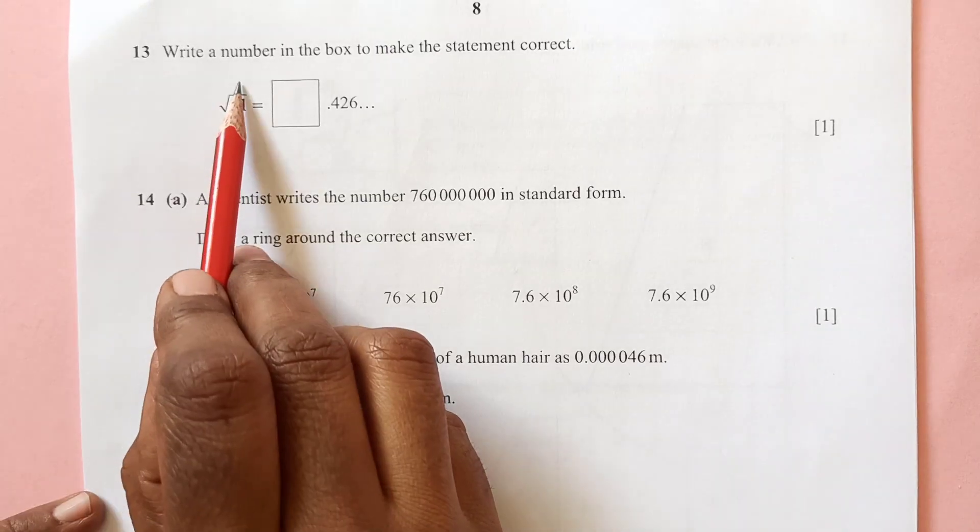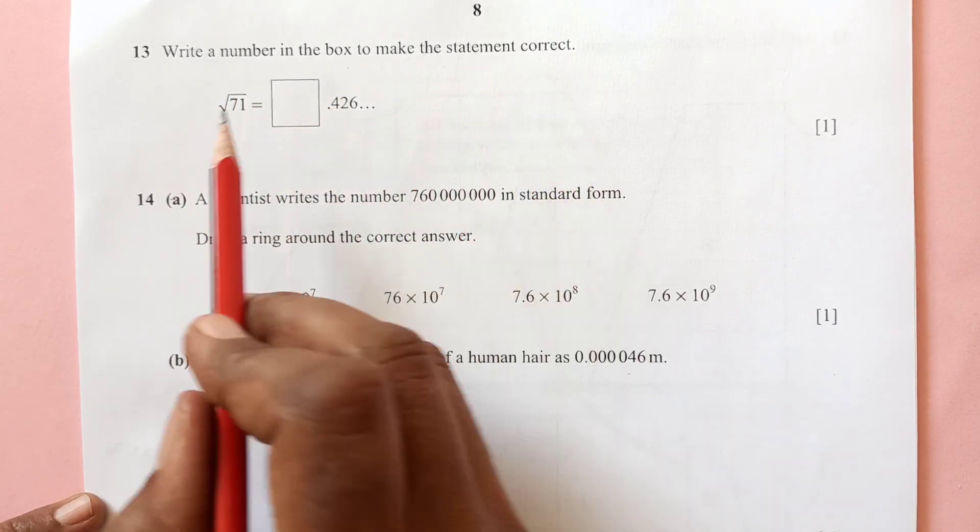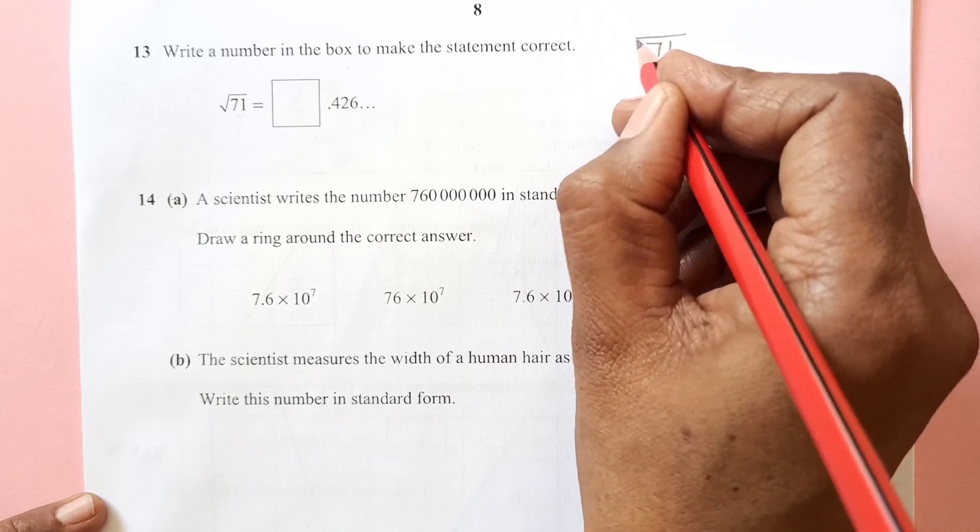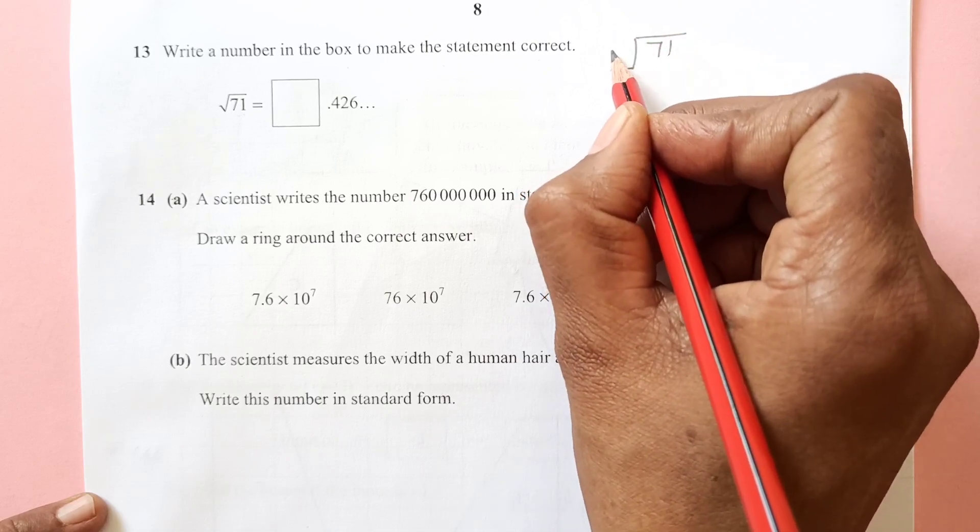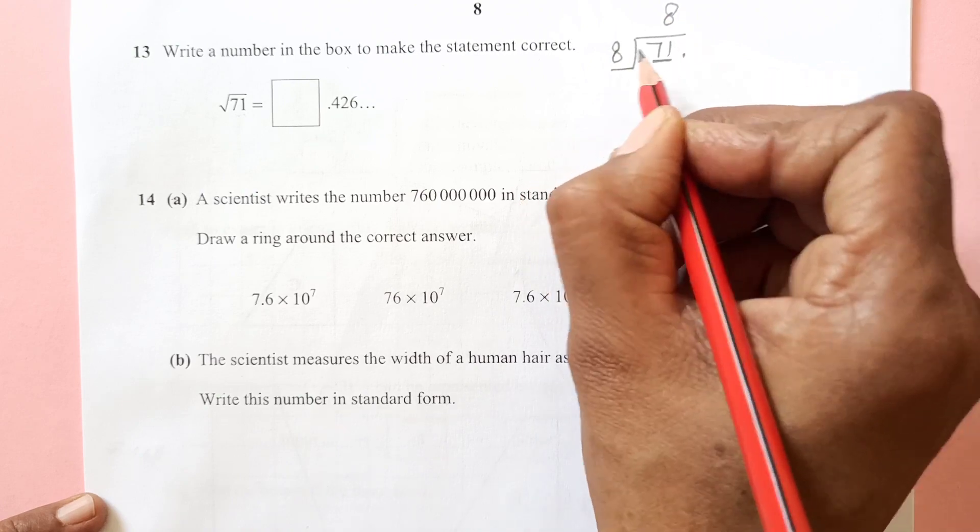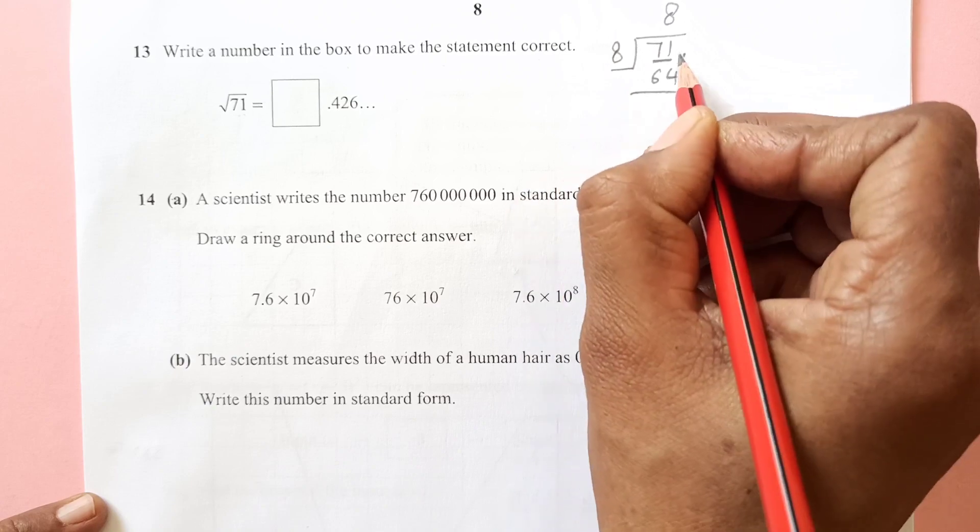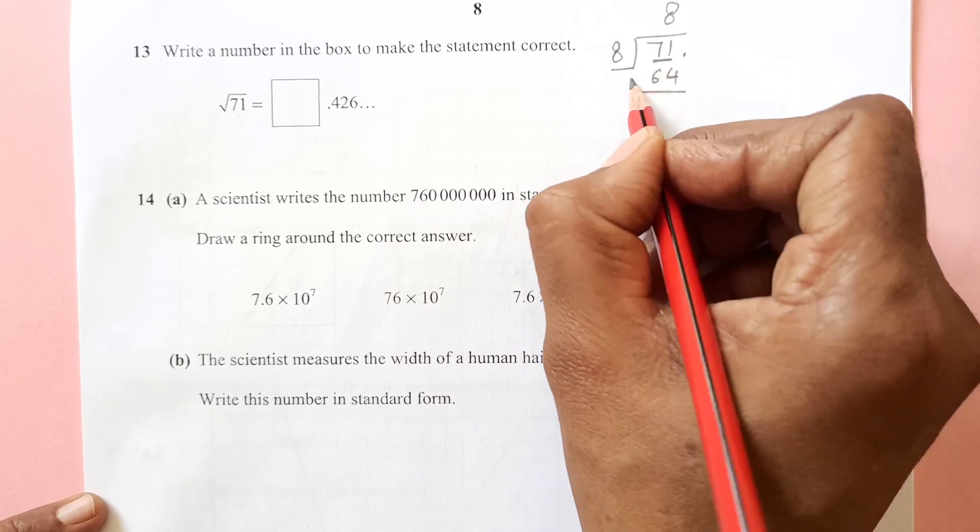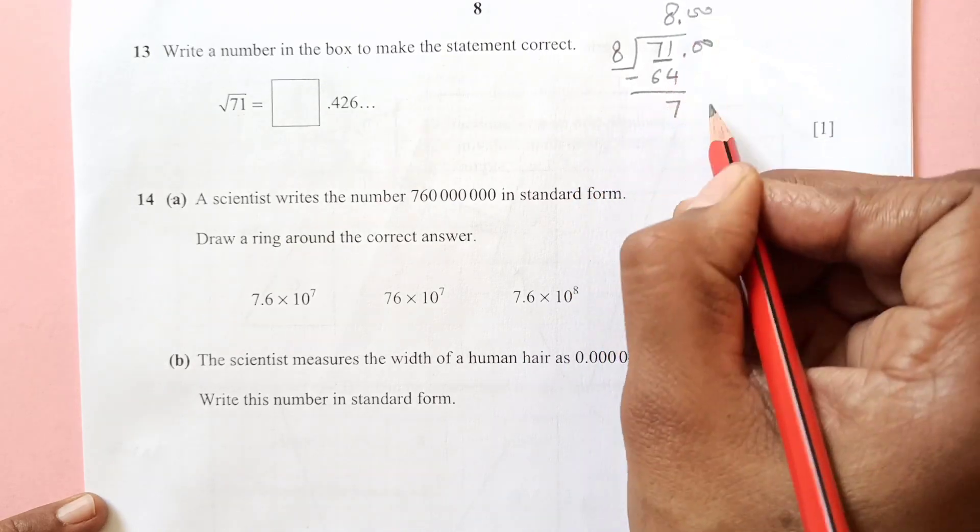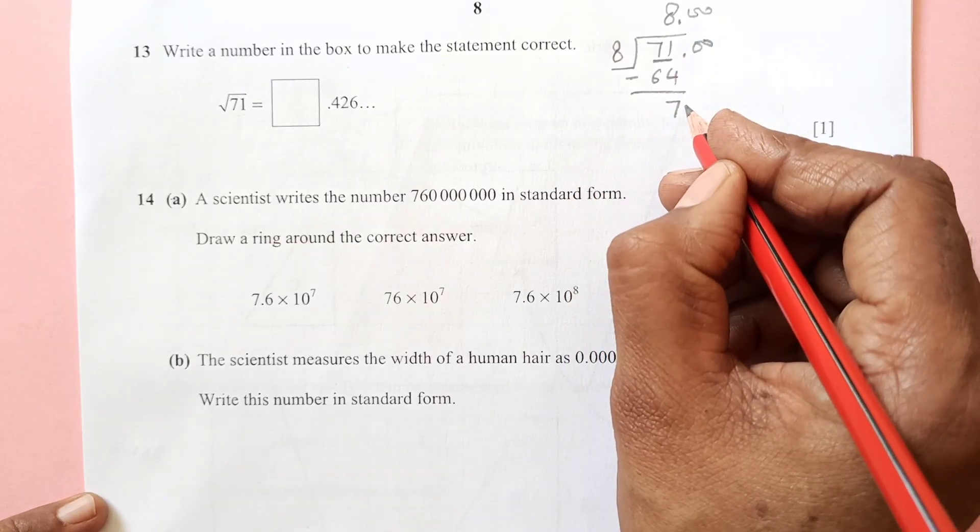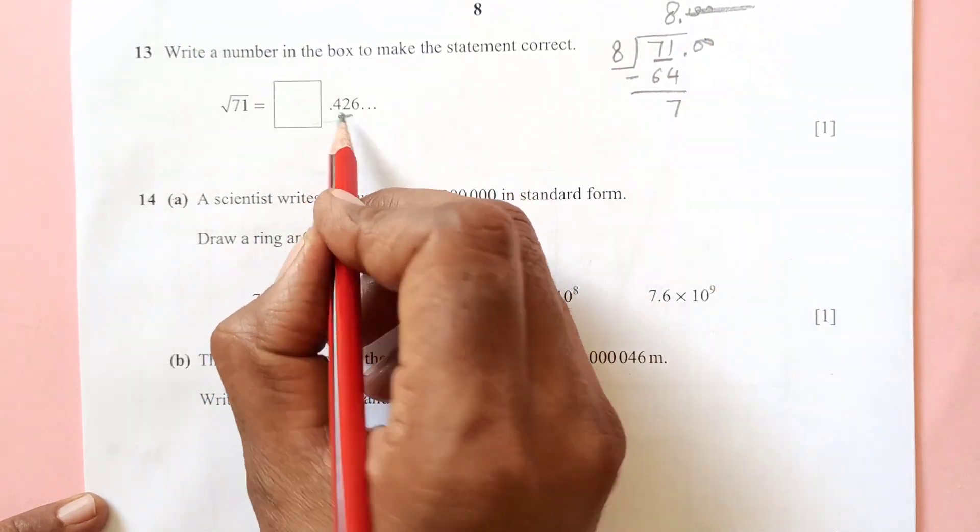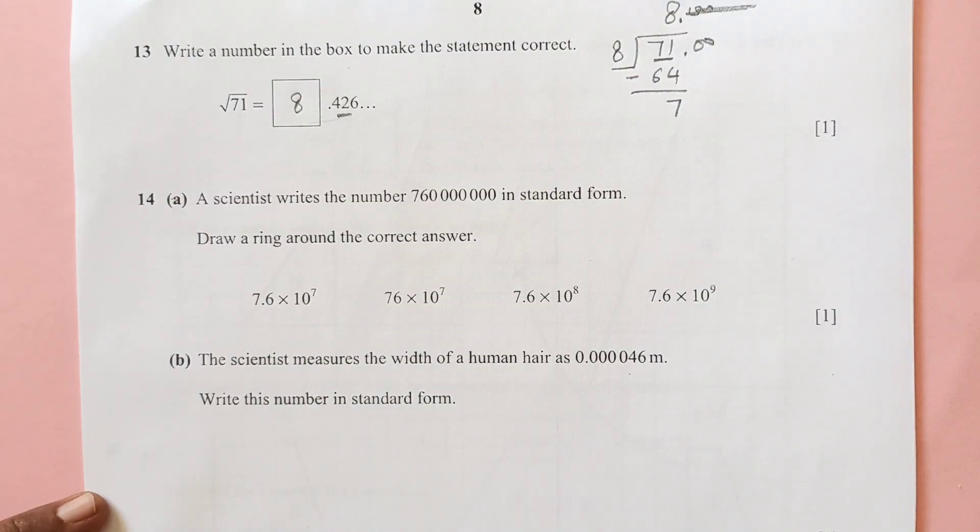Now question 13, write a number in the box to make the statement correct. We have square root of 71. You need to have a number here. Let's say we have 8 here, 8 times 8. We need to make the pairs. 8 times 8 is 64. So 71 minus 64 is 7. Then we have 0 here. We do not need this one, actually. We are given this here, so we will have 8 in the box.